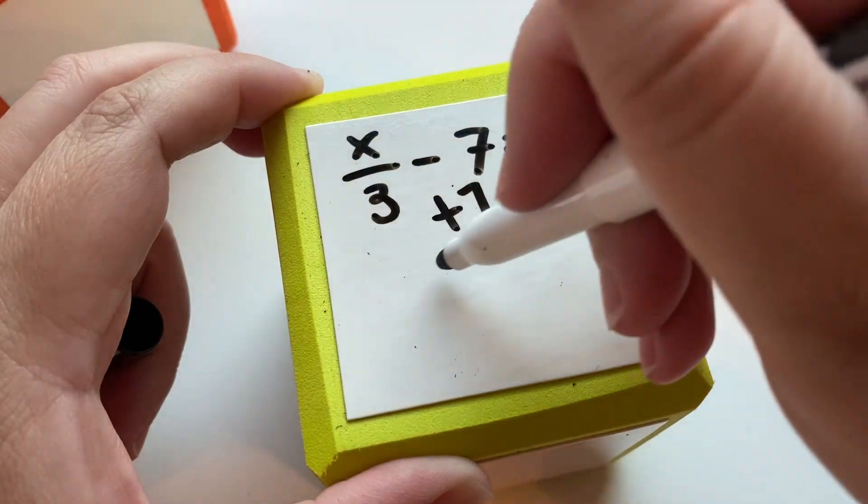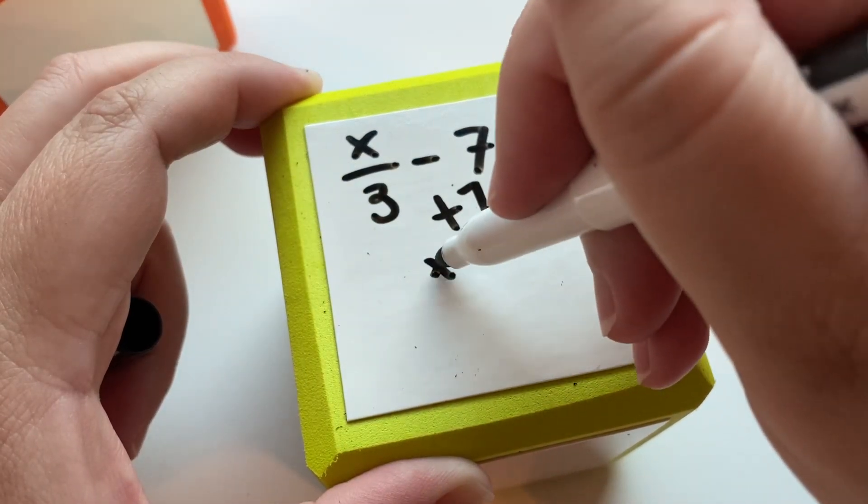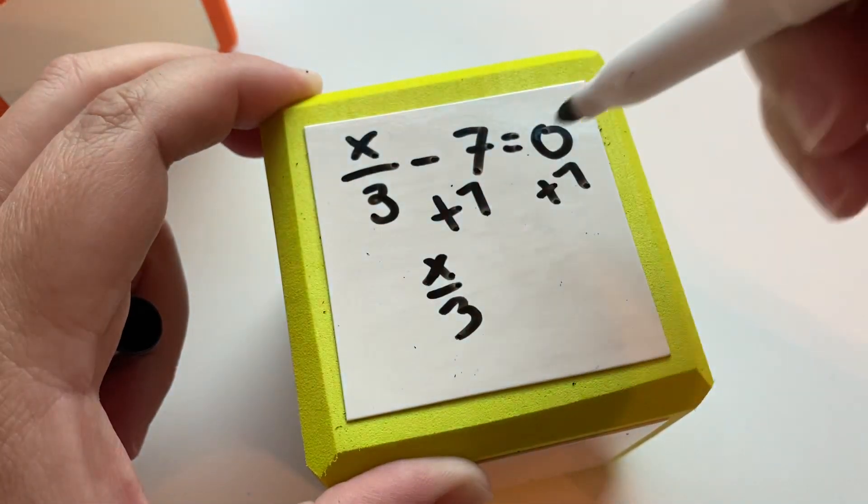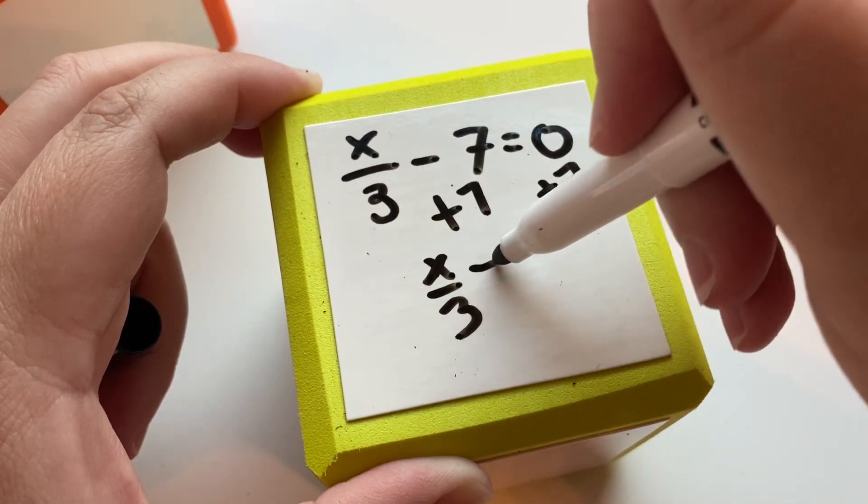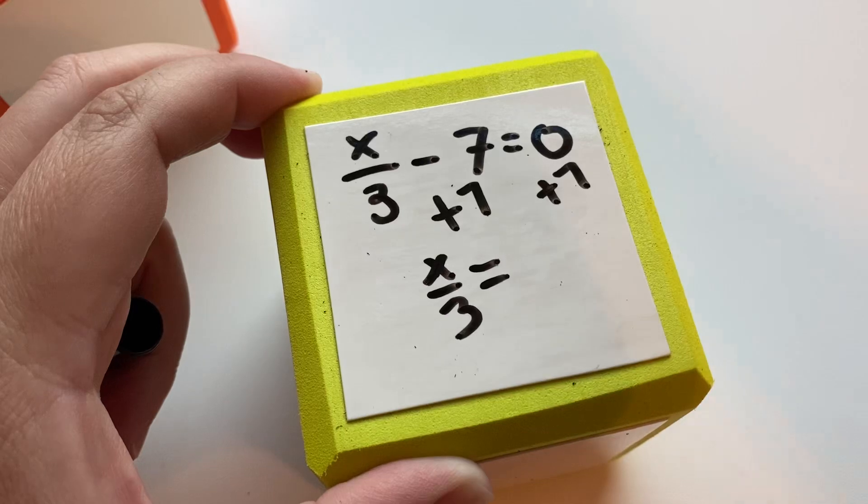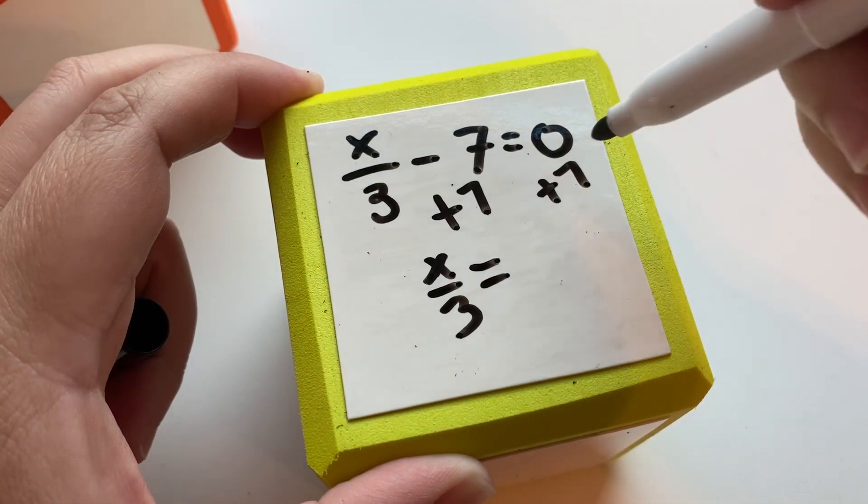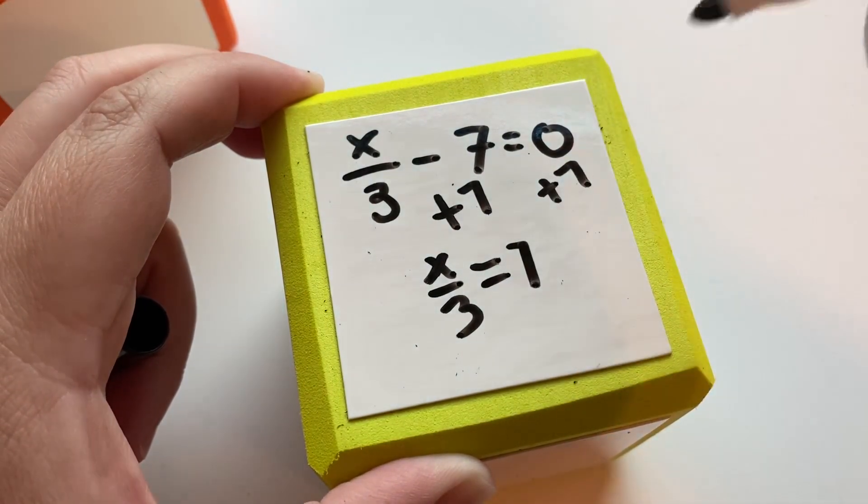So we will be left with x divided by 3 because negative 7 plus 7 equals 0. So that's gone, which is what we're trying to do is get stuff gone. And then 0 plus 7 is 7.